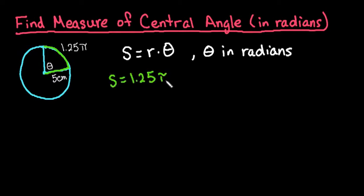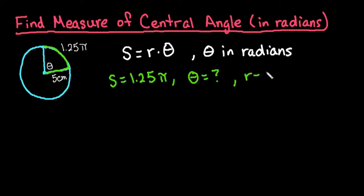I am going to leave my answer for this one in terms of pi. If they did ask for an approximate answer, you would just plug it into your calculator. So theta is what we are finding, we don't know what that is, and R is going to be 5 centimeters. The arc length on this one is also in centimeters — I just forgot to write that down — so the centimeters will cancel out.